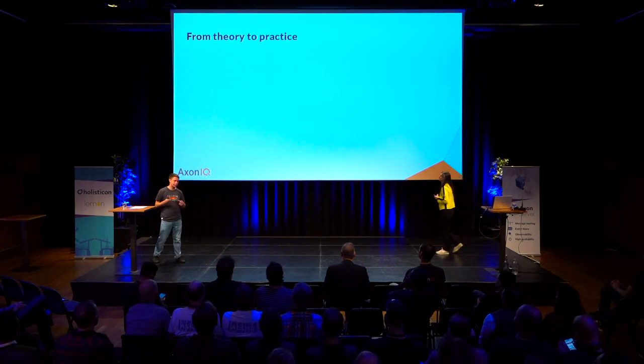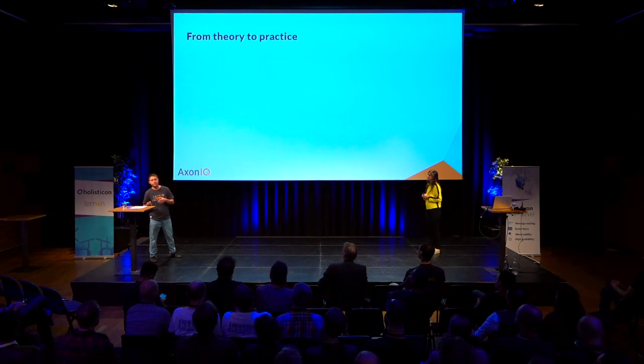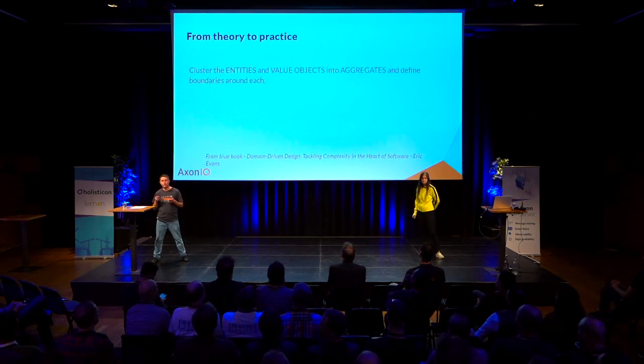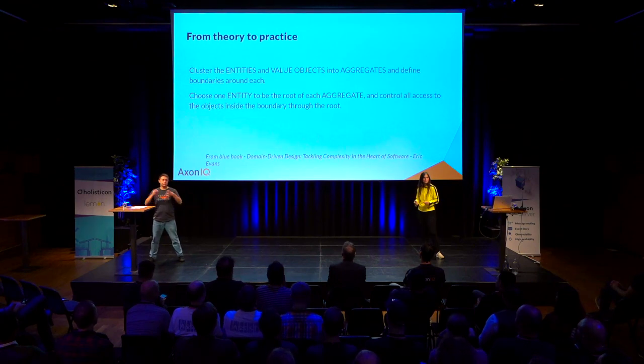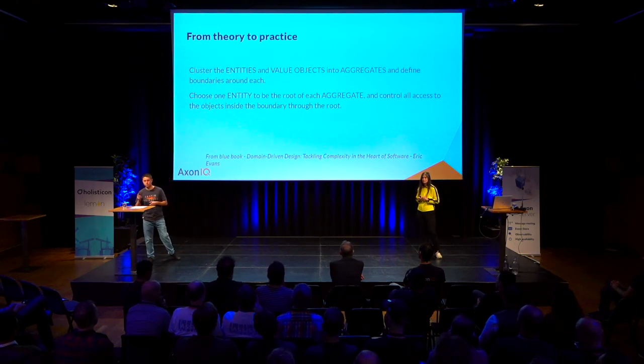These mistakes sometimes lead developers to consider the whole architecture overcomplicated. So we are going to consult the blue book again and try to bridge the gap between theory and practice. It tells us we should cluster entities and value objects into aggregates and define boundaries around each, choose one entity to be the root of each aggregate, and control all access to the objects inside the boundary through the root.